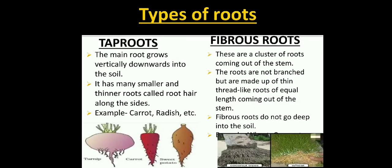Types of root. The roots always grow down into the soil to form the base of a plant. From the main root, a number of roots arise. The roots are differentiated into two kinds: tap roots and fibrous root. In tap roots, the main root grows vertically downwards into the soil. It has many smaller and thinner roots called root hair along the sides. Example: carrot, radish, etc.